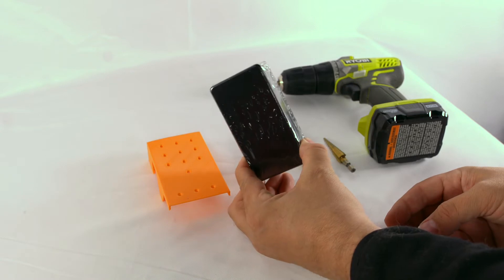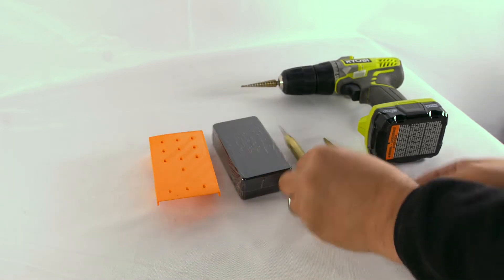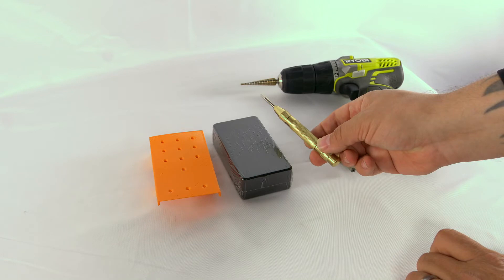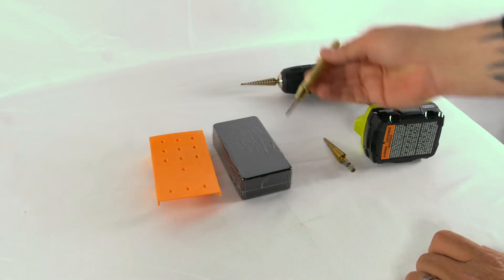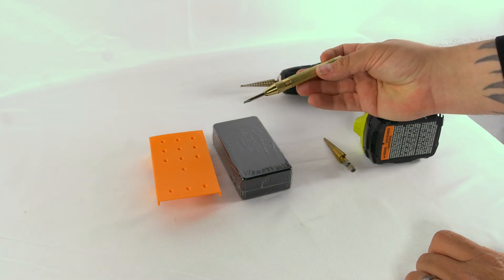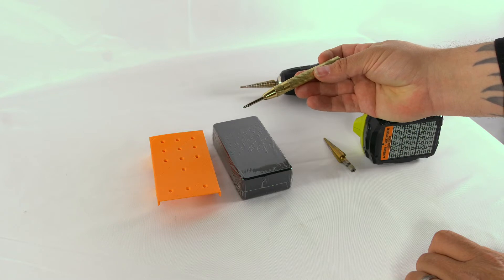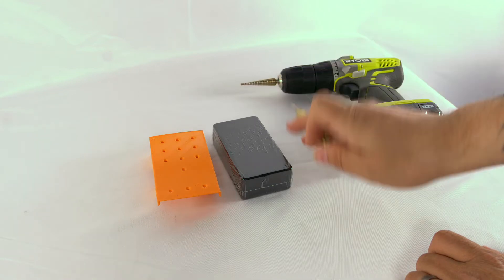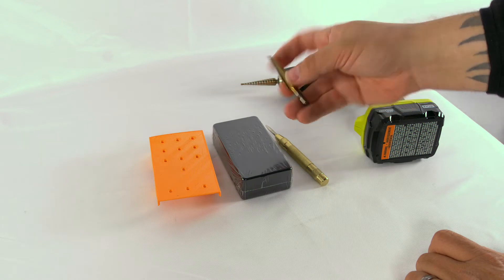Here's a 1590B enclosure. You'll need that. You're definitely going to want a pedal punch. You can pick one of these up for about eight bucks at any home goods store. And then we highly recommend using a stepped drill bit.